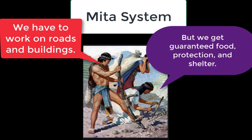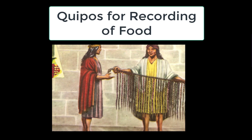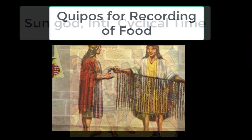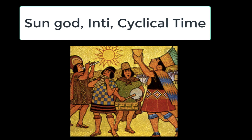The Incan bureaucracy centralized food production and recorded it through what's called quipos, or knotted cords. All of this was justified in an elaborate religious system. The sun god Inti demanded that the people produce agriculture and provide sacrifice to continue the cycle of the harvest, similar to the Aztecs.